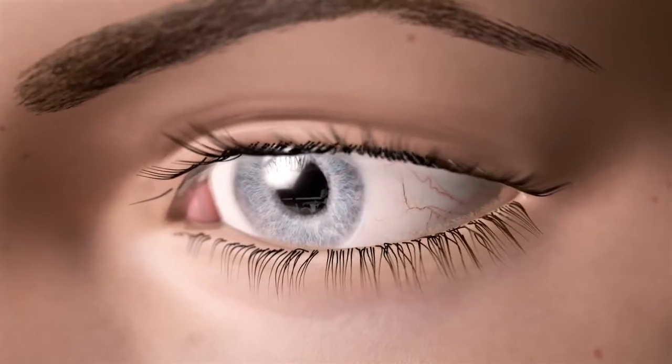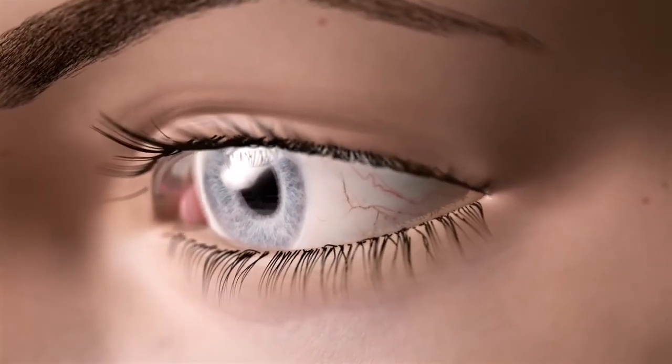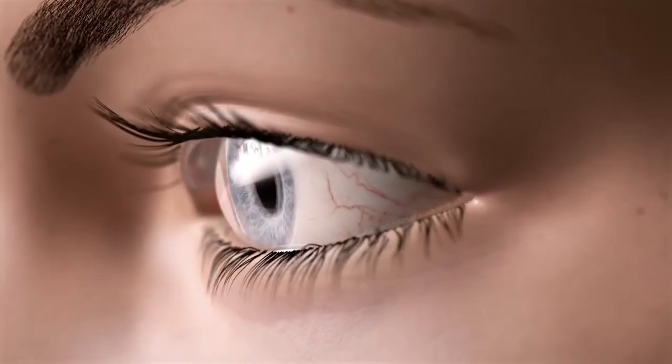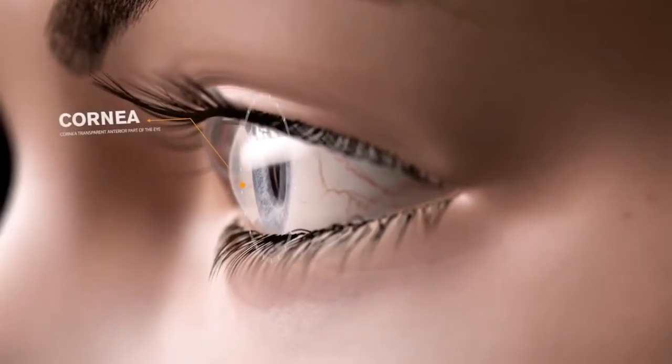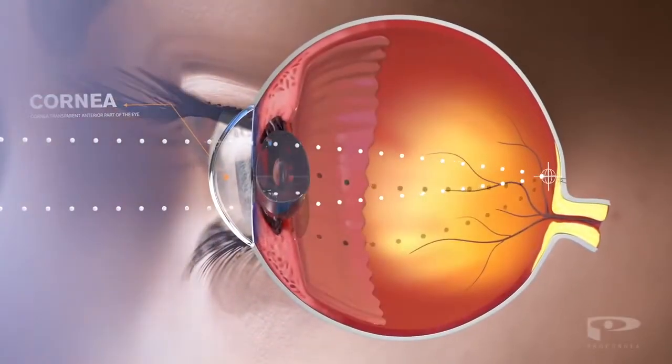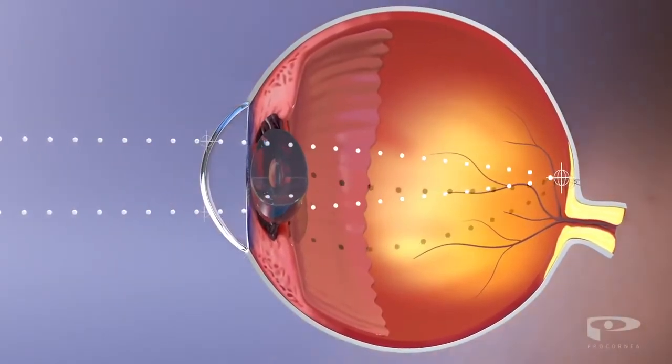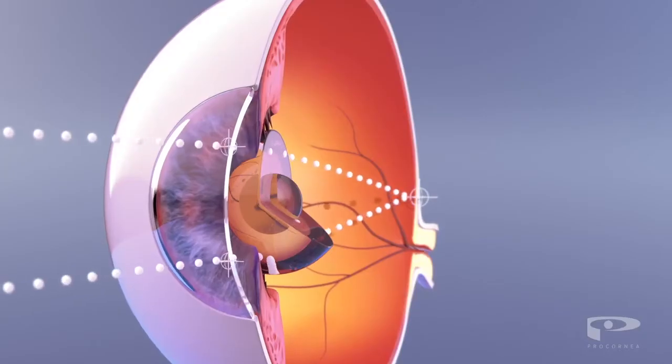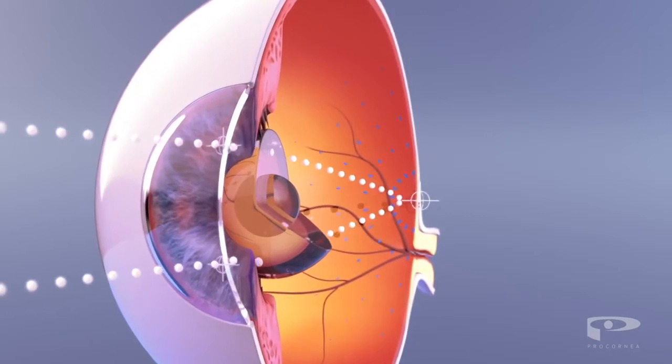When we look at something, light enters the eye through the cornea. The cornea has a curved lens-like shape, which helps to focus light directly on the retina at the back of the eye. This forms a clear, sharp image.